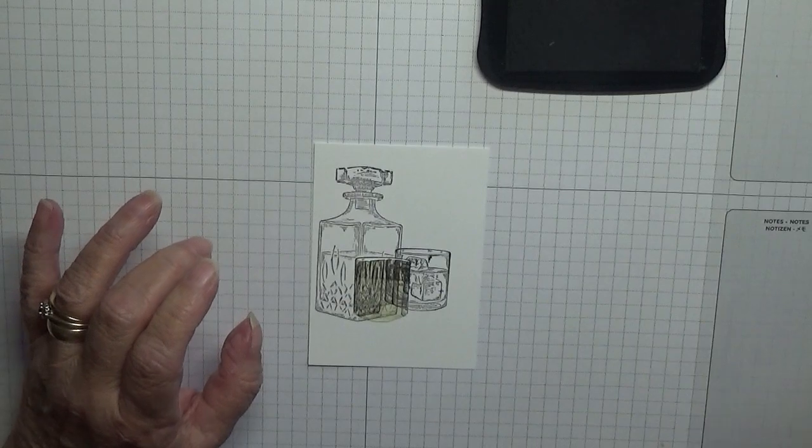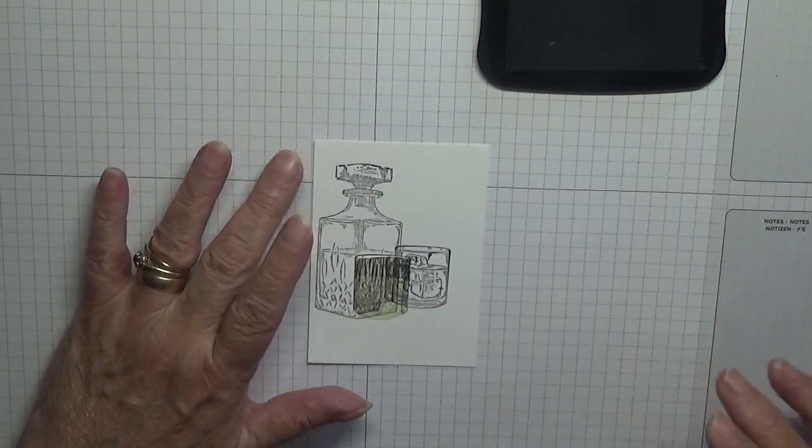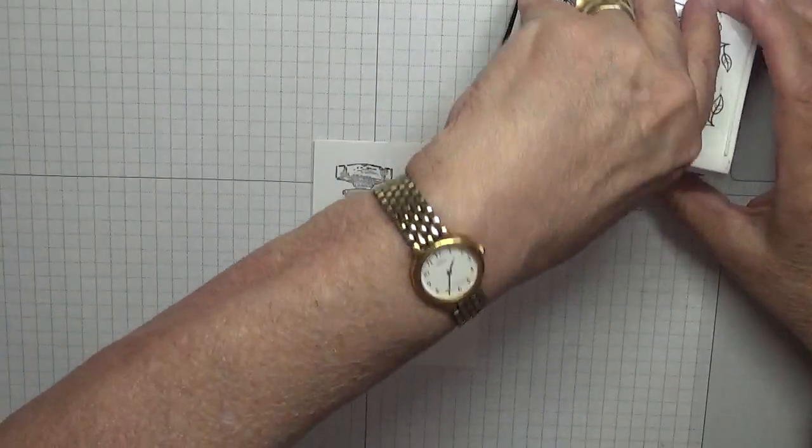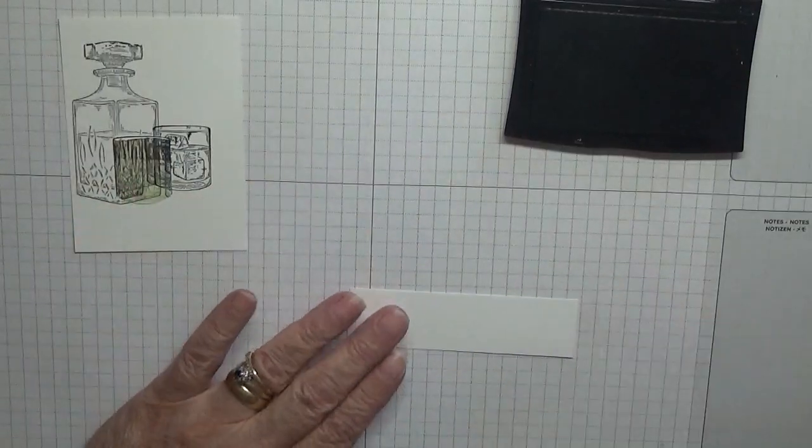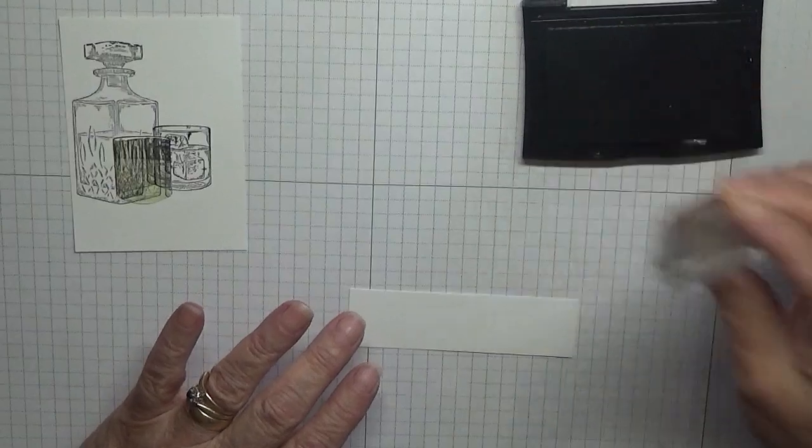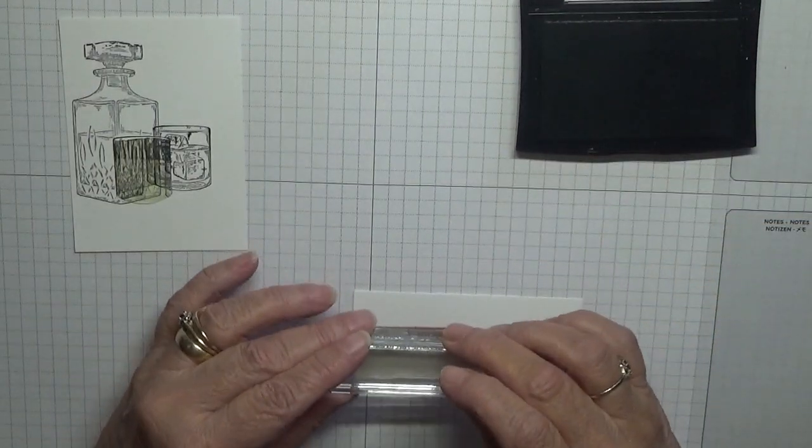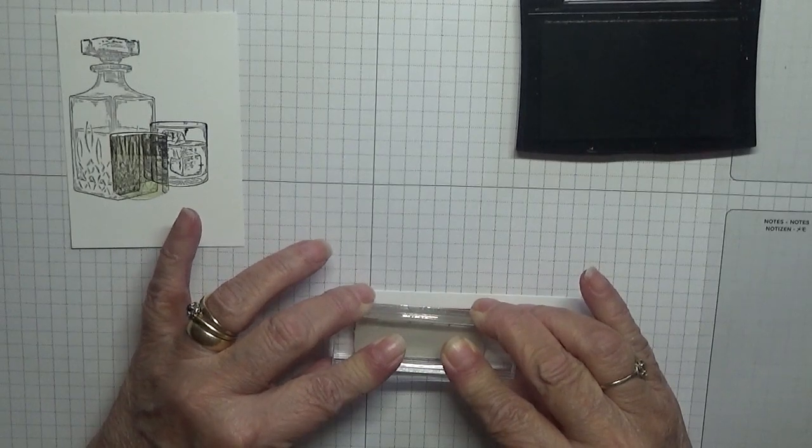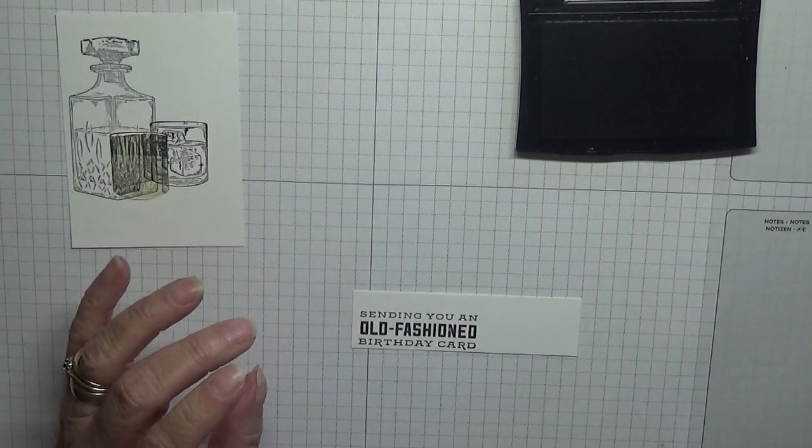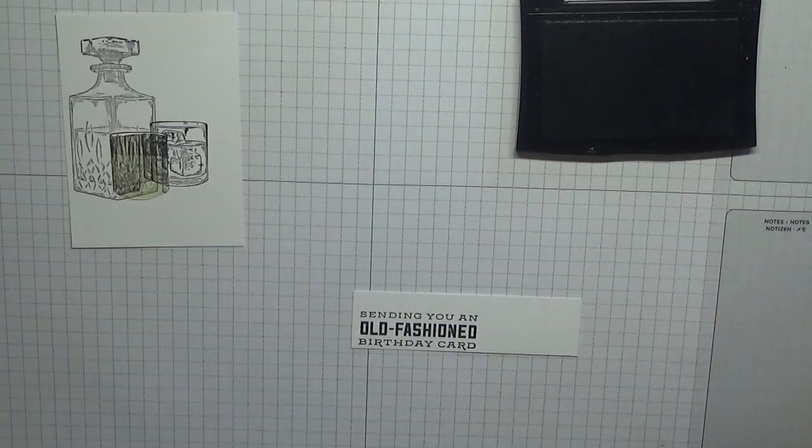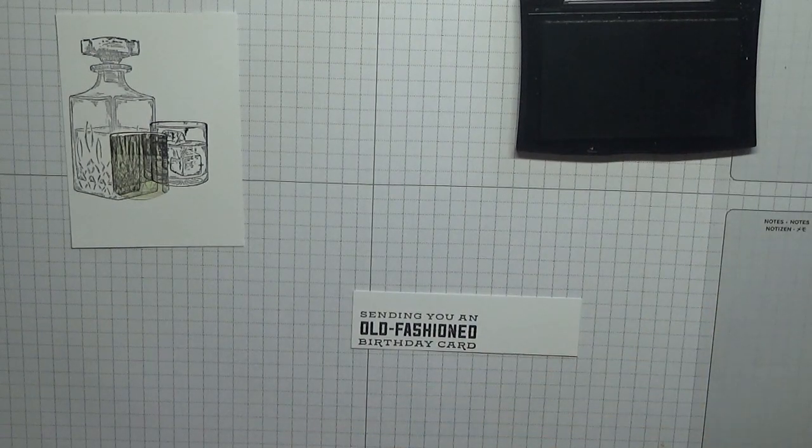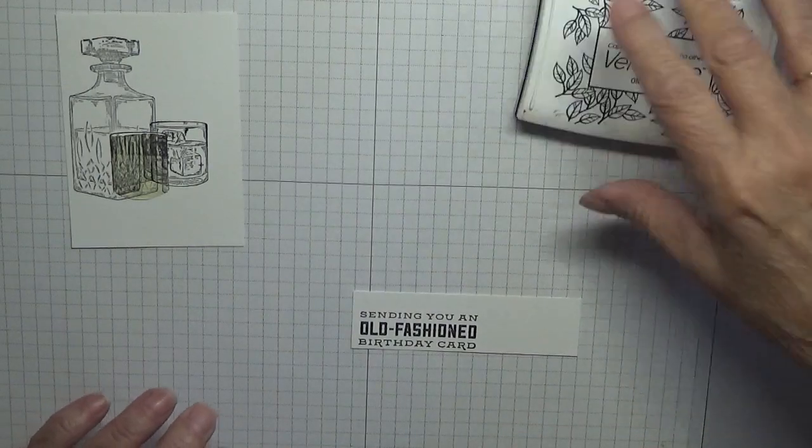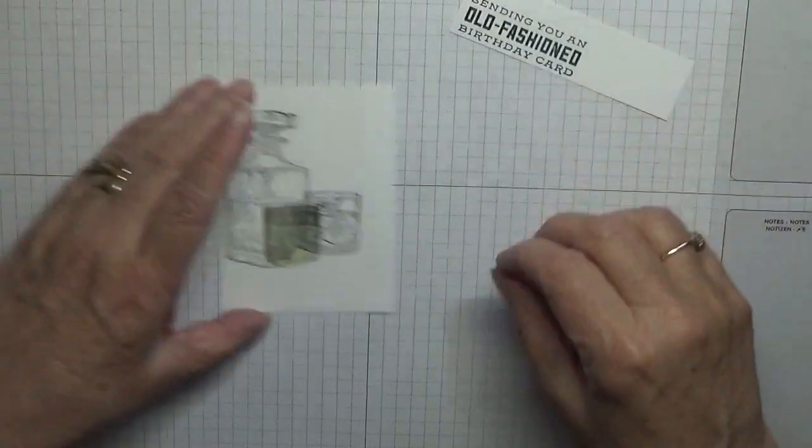Like that, and then that's that stamping done. I'm going to bring in the Versafine and the scrap of white for the sentiment, and we'll stamp that down there like that. Get my cleaning cloth out, lay all the stamps on it and I'll clean them afterwards. Take off the mask.